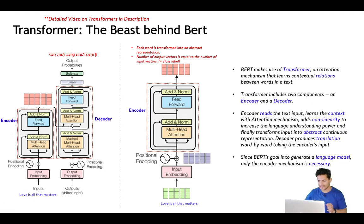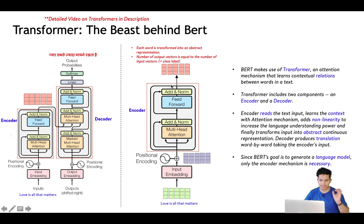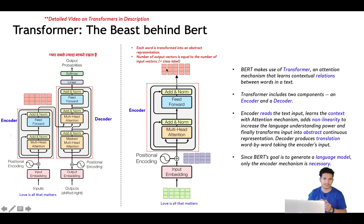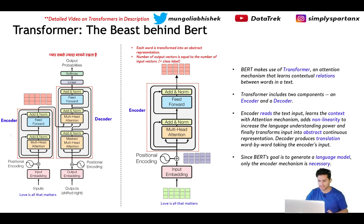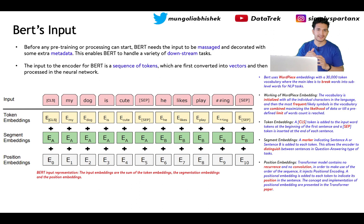The decoder takes these vectors and translates them. Since BERT's goal is to understand a particular language, it just uses the encoder part of the transformer. Given 'love is all that matters,' each word will be transformed into an abstract vector representation. The number of output vectors will be the same as the number of input words, each word having its own encoded representation. There will also be a class label used in the pre-training of BERT.